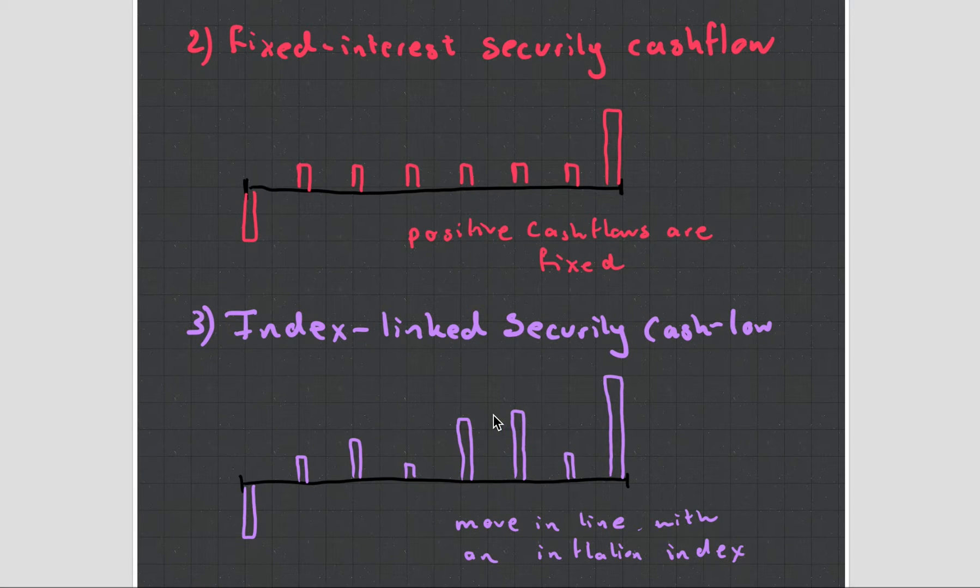The index linked security, as you can see here, it's a little bit different. And why it is like this is because it moves in line with inflation. So if inflation is very high, which we see here, the investor is compensated for that by getting a little bit more. If inflation is very low, the investor just gets a little bit. So what happens here is you're getting more of a real amount, whereas here you're getting a nominal amount.